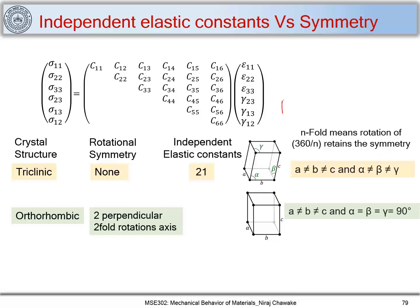For example, a square has four-fold symmetry: 360° divided by 4 means if I rotate a square by 90° it retains symmetry. You can read more about symmetry in any standard structural or physical metallurgy book. For the orthorhombic crystal structure, α = β = γ = 90° makes these three planes orthogonal to each other.